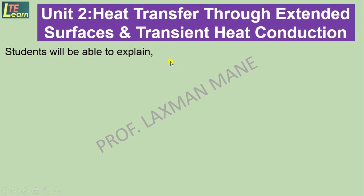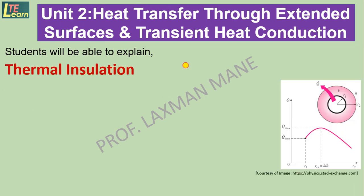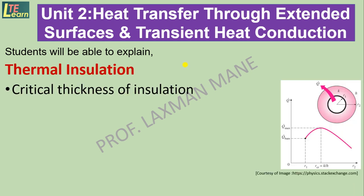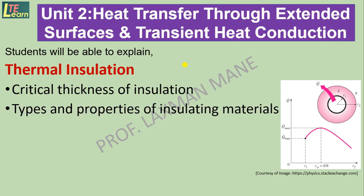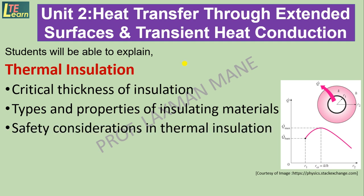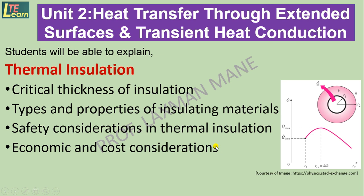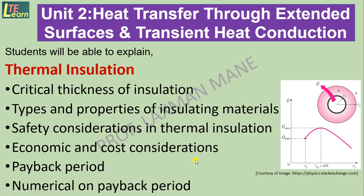Unit number two: heat transfer through extended surfaces and transient heat conduction. In this unit you will be able to explain about thermal insulation. It covers critical thickness of insulation, types and properties of insulating materials, safety considerations in thermal insulation, economic and cost considerations, and payback period with its numerical.